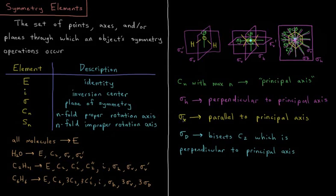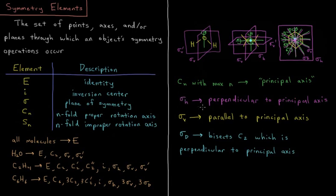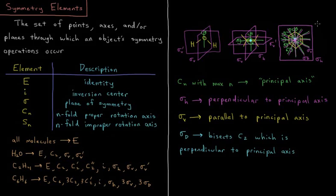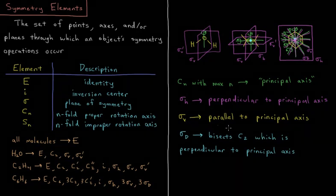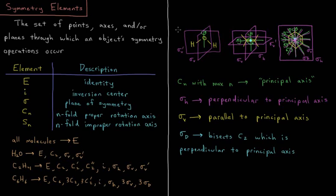The label sigma H versus sigma V involves whether or not it is perpendicular to the principal axis. In benzene, the C6 is perpendicular to the plane of the board here. So sigma H is the plane of the molecule, which is perpendicular to that C6 principal axis. Sigma V is something that is parallel to the principal axis. In water here, both of these are sigma Vs, parallel to our principal axis.